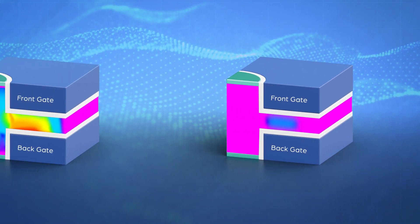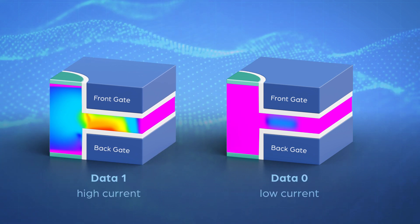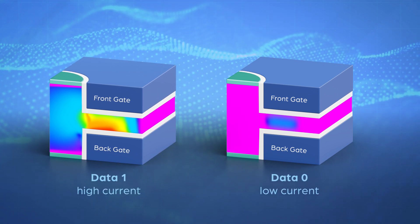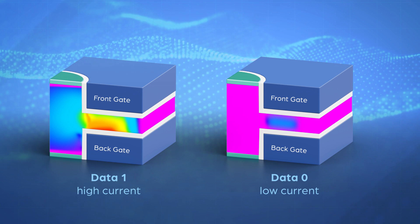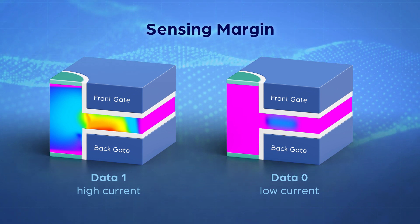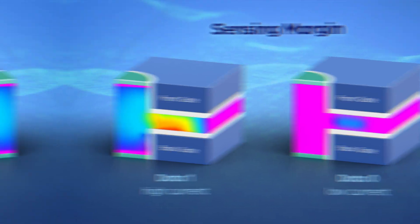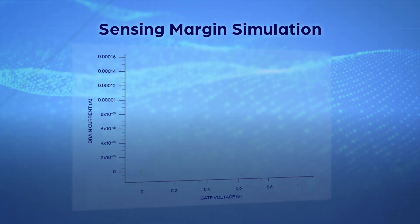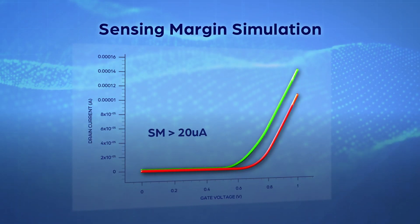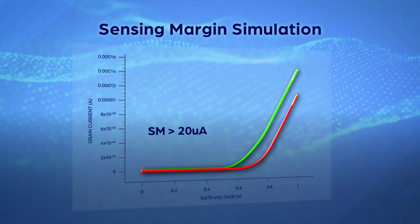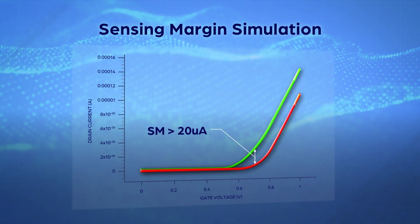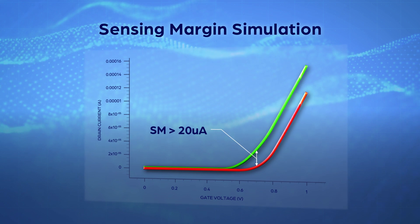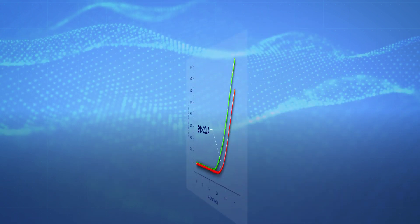During read operation, a sense amplifier detects the cell current to determine the stored data. The difference between the current of data 1 and data 0 is called sensing margin. TCAD simulation shows 3D XDRAM's sensing margin is higher than 20 microamperes. The high margin enables high read speed and reduces data error rate.